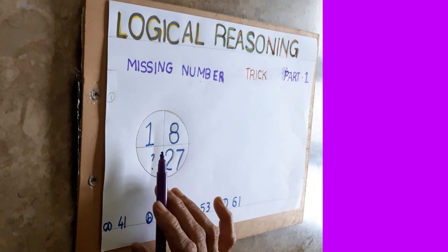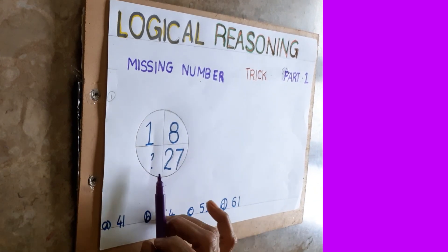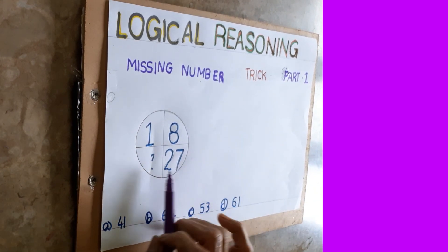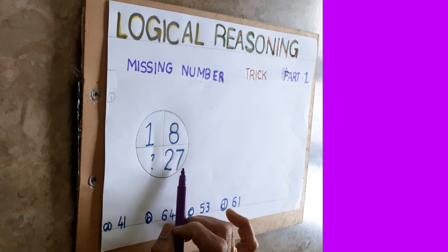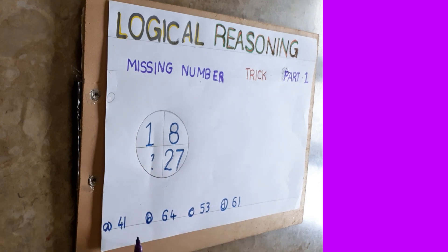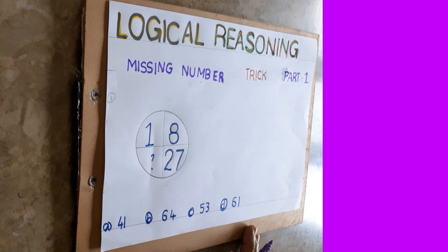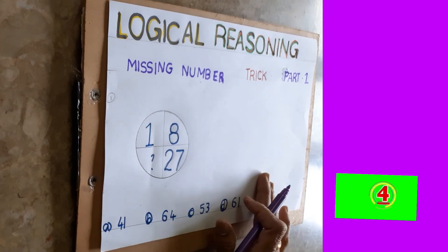The first sum is like this: one, eight, this one you don't know — this is an empty place they have given — and this is 27. They gave four options. I'll give you five seconds to think, or else I'll explain.